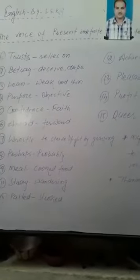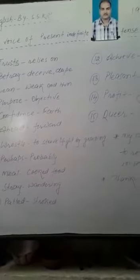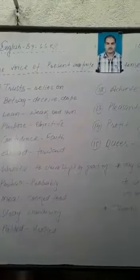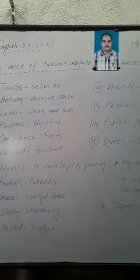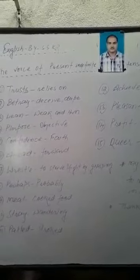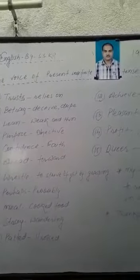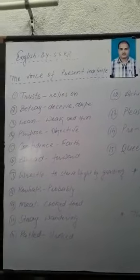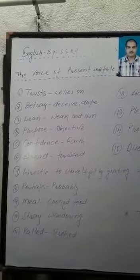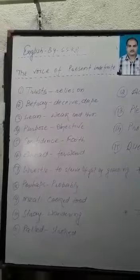Number 1: Trust means relies on. Number 2: Betray means deceive or dupe. Number 3: Lean means weak and thin. Number 4: Purpose means objective. Number 5: Confidence means faith. Number 6: Ahead means forward.